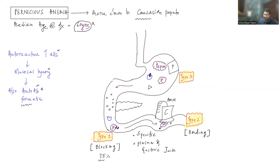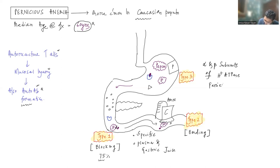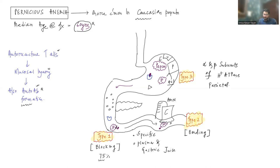Coming to the third type of antibody — Type 3 — this antibody is actually against the alpha and beta subunits of the H+ ATPase pump that is present in the parietal cells. As parietal cells produce intrinsic factor and also hydrochloric acid, they need this H+ ATPase pump. Type 3 auto-antibodies are detected against these subunits. These are otherwise known as anti-parietal cell antibodies.